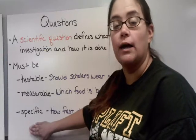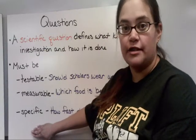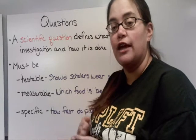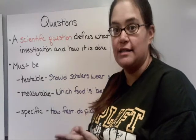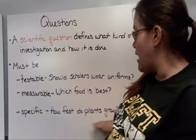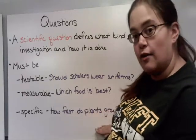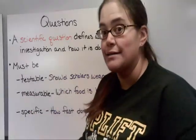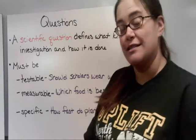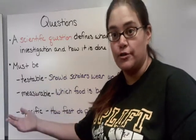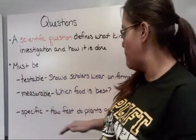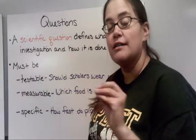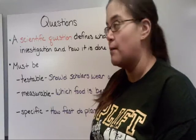Specific is a big one that a lot of sixth graders have trouble with. You need to be as specific as possible so you know exactly what you're testing. For example, 'How fast do plants grow?' — what plants? Are we talking sunflowers or maple trees? Big difference. You need to be specific so that someone else can repeat your experiment.